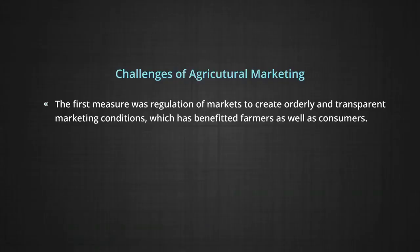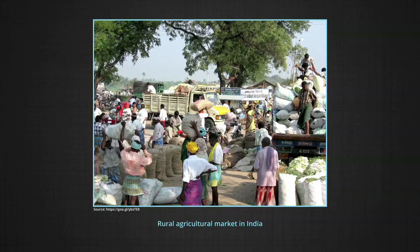Let us discuss some of the measures initiated to improve the marketing aspect in agriculture. The first measure was regulation of markets to create orderly and transparent marketing conditions, which has benefited farmers as well as consumers. However, there is still a need to develop rural periodic markets as regulated marketplaces to realize the full potential of rural markets.